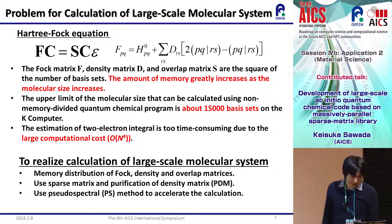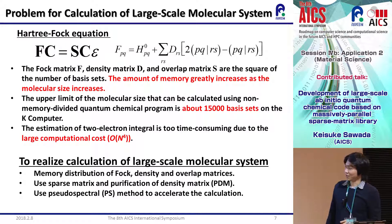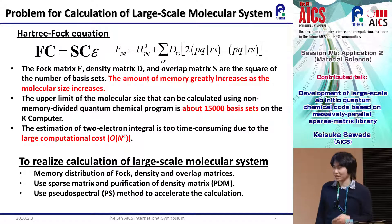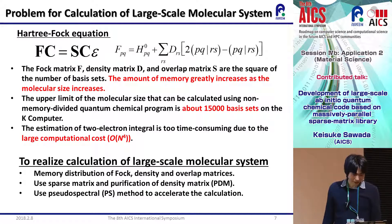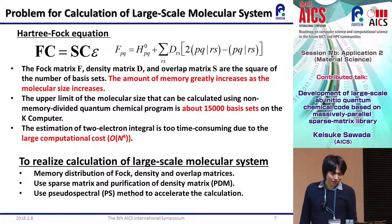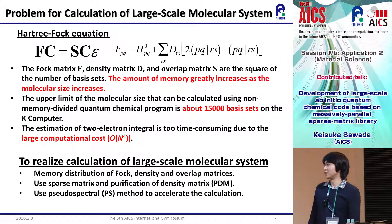To overcome these problems, what we need to do is: memory distribution of Fock, density, and overlap matrices; use of sparse-type matrices; and use of the purification of density matrix, or PDM, technique instead of dense matrix diagonalization. The PDM is one method to obtain the converged density matrix based on quantum mechanical theory. Additionally, to accelerate the calculation and reduce computational cost, we adopt the pseudo-spectral, or PS, method for estimation of two-electron integrals.